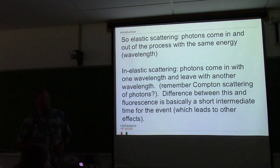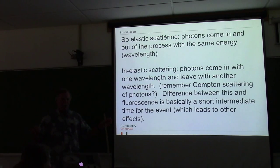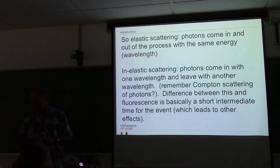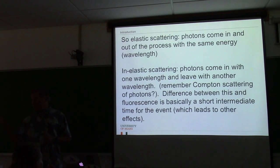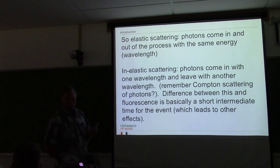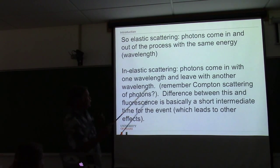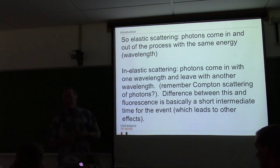Compton scattering: a photon comes in, leaves with a different wavelength, and the energy goes off into an electron. The reason you study Compton scattering in physics is because it was one of the things that showed that a photon was actually a discrete particle, because you could predict things with just collision equations.